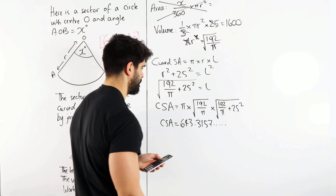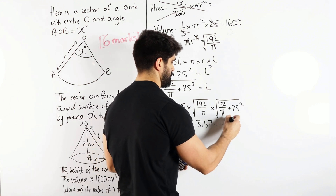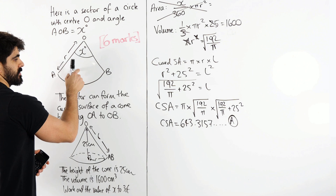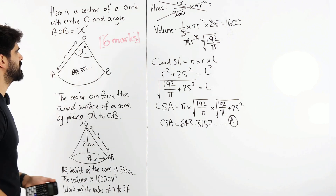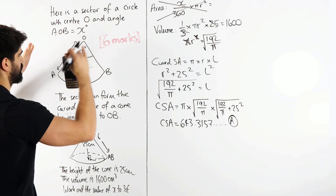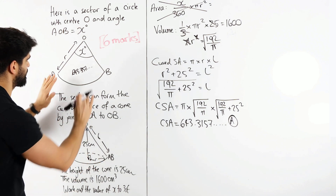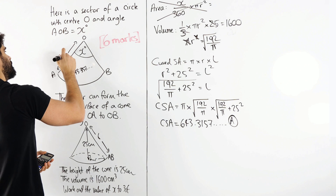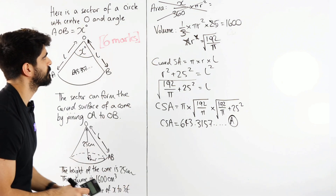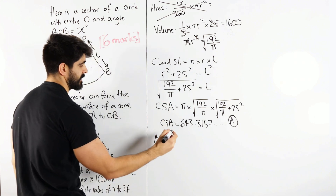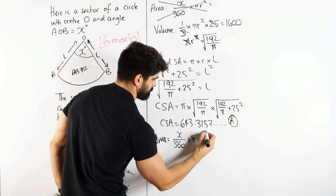The curved surface area is 643.3157. Now, to find X I need to know the radius of the sector. Think about it: when the sector is curved round, its radius becomes the slant height l of the cone. OA and OB are both equal to l — the fact that A and B have connected with each other confirms this. So the radius of the sector is just l.